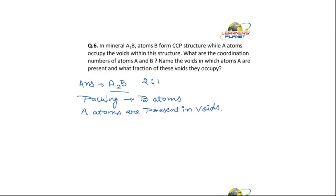So how many A atoms are there for B atoms? There are 2 A atoms per B atom. It means that the B atoms will have 1 octahedral void. And for 1 B atom, there will be 2 tetrahedral voids.